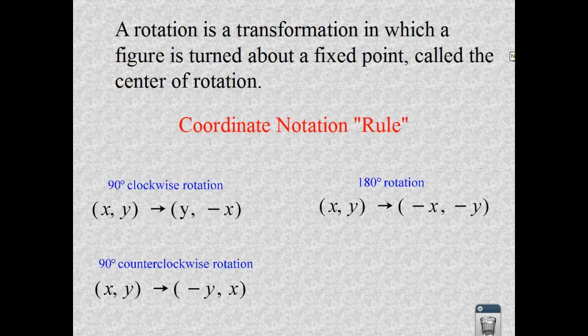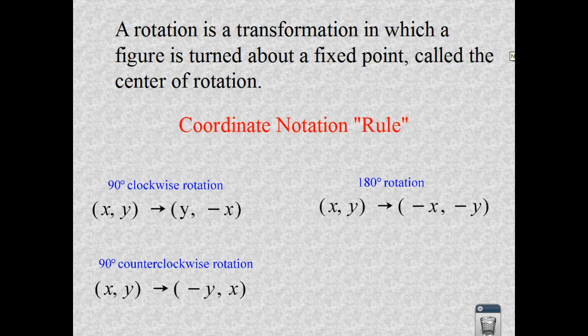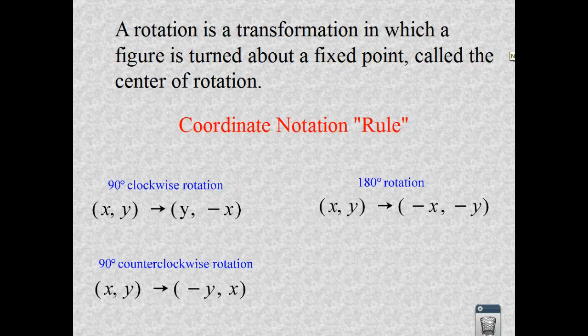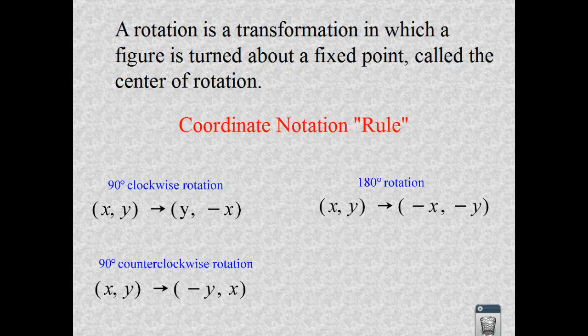A rotation is a transformation in which a figure is turned about a fixed point called the center of rotation. And we have right now three different types of rotations along with their coordinate notation rules.